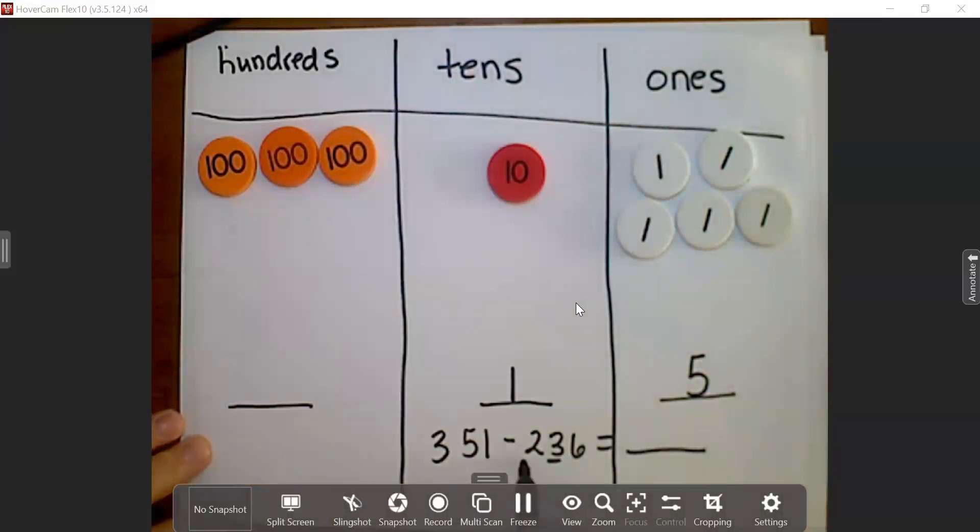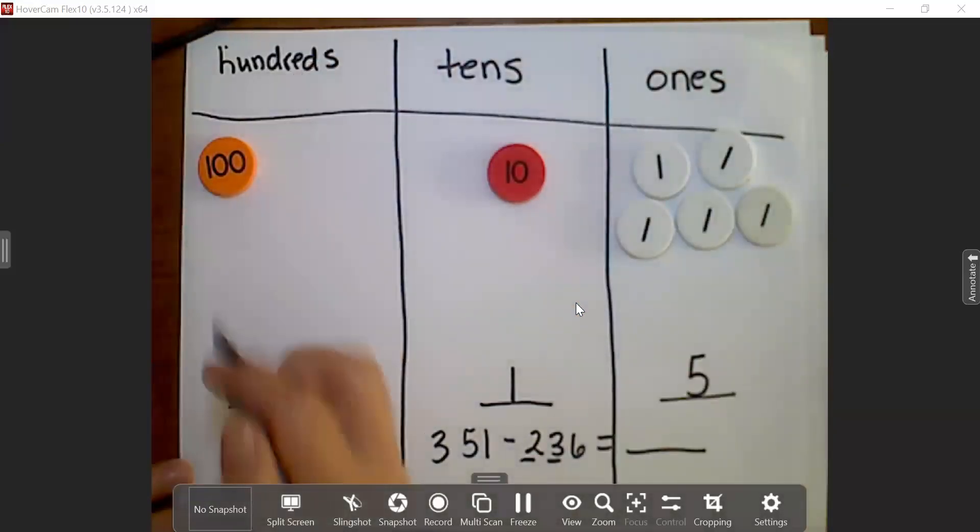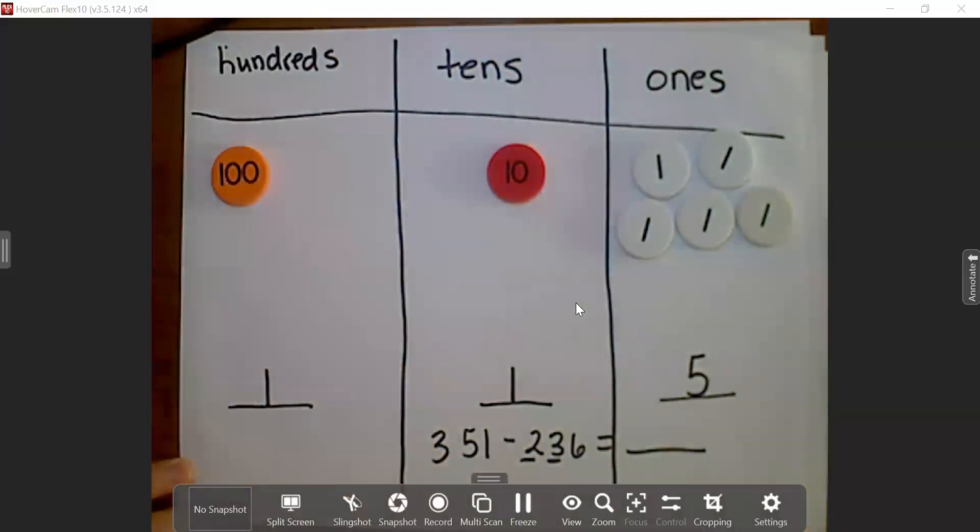And next I move on to my 100s place, and I have two 100s that I need to take away. So goodbye 100s, one, two. I record my, in my place, my 100s place. And so the difference of 351 minus 236, this is called the difference, is 115.